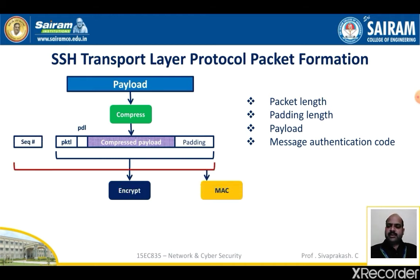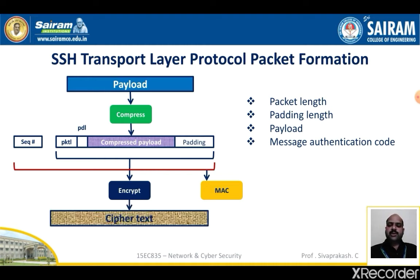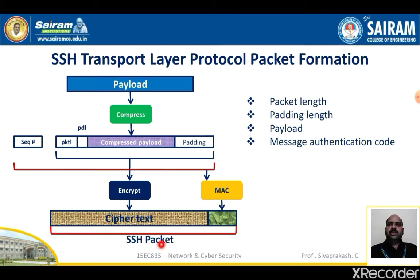The encrypted data consists of packet length, padding length, compressed payload data, and padding bits. A sequence number is added along with the encrypted data to create the MAC. After encryption we get a ciphertext, and after the MAC we have MAC data. Finally, the ciphertext and MAC data together form the SSH packet. The packet length field identifies the length of the packet in bytes, not including the packet length and MAC fields. The padding length field identifies the length of the random padding field.